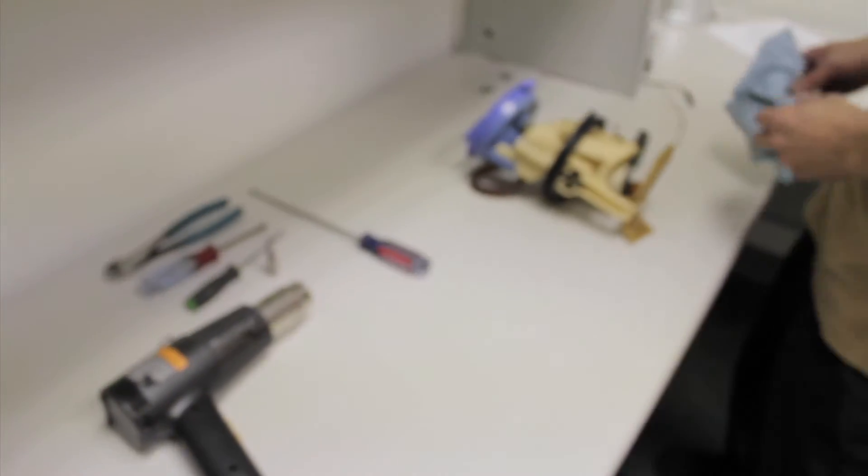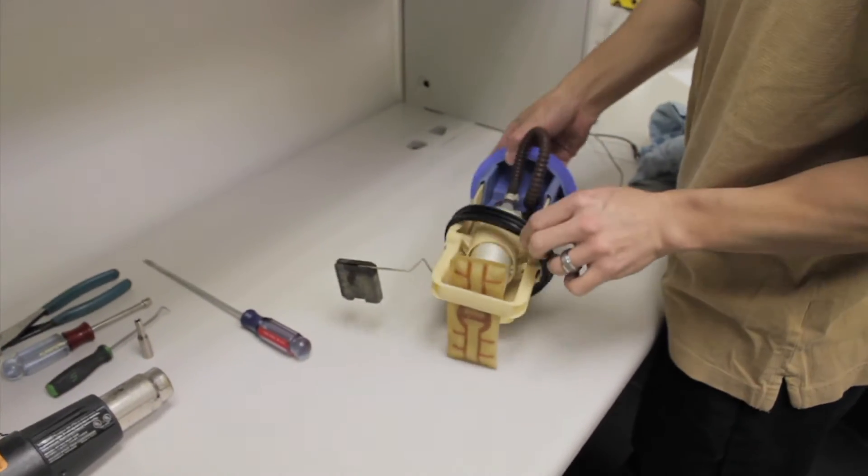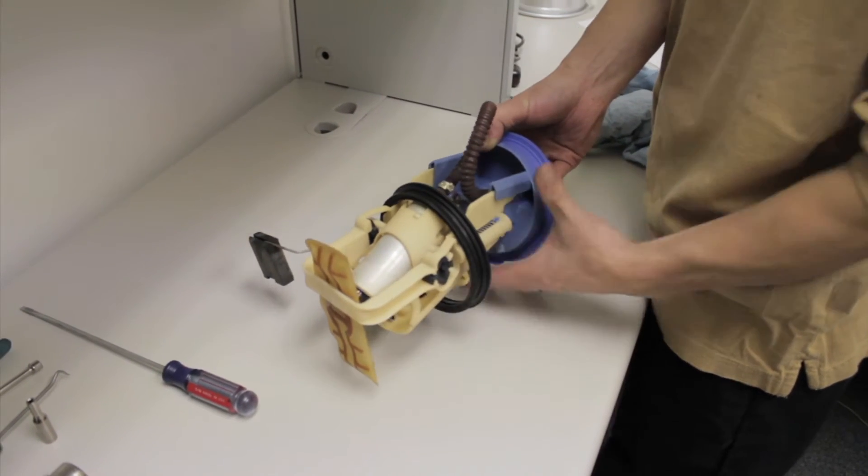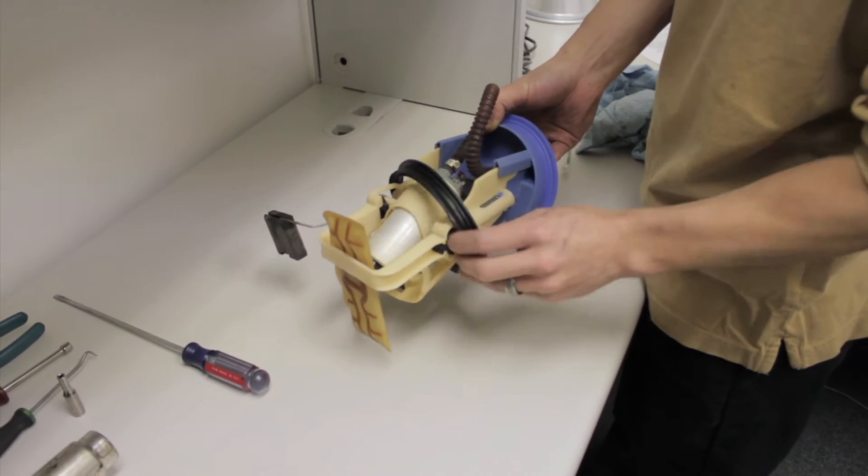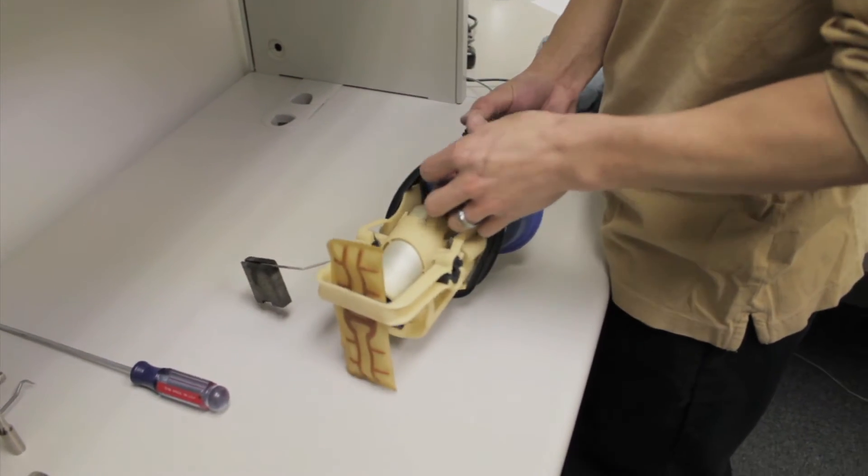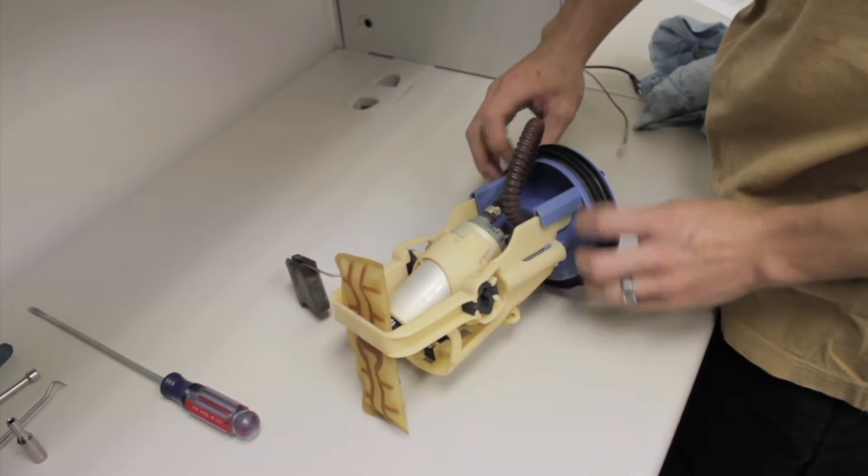So basically what I'm going to do now is use my wire cutters. Now this ring, this is the sealing ring for the hanger assembly into the tank. You can slide this down or up, I wouldn't recommend taking it off. Slide it back into place there.